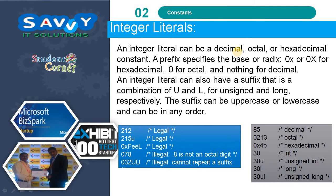Integer literals are also called constants. An integer literal can be a decimal, octal, or hexadecimal constant. A prefix specifies the base or radix: 0x or 0X for hexadecimal, 0 for octal, and nothing for decimal. An integer literal can also have a suffix that is a combination of u and l for unsigned and long respectively. The suffix can be uppercase or lowercase and can be in any order.